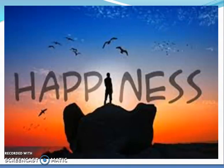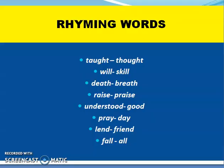Dear students, now we are moving towards the rhyming words of the poem. A poem is different from prose as it follows a rhyme scheme. A poet uses rhyming words which sound similar at the end of each line or alternate lines to give a poem its beauty. In this poem, the rhyming words we have — you will speak after me.